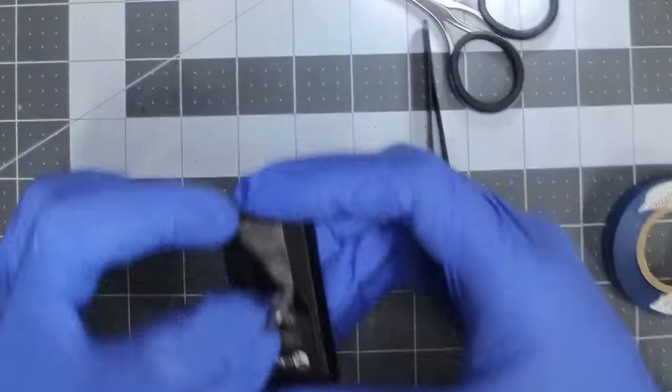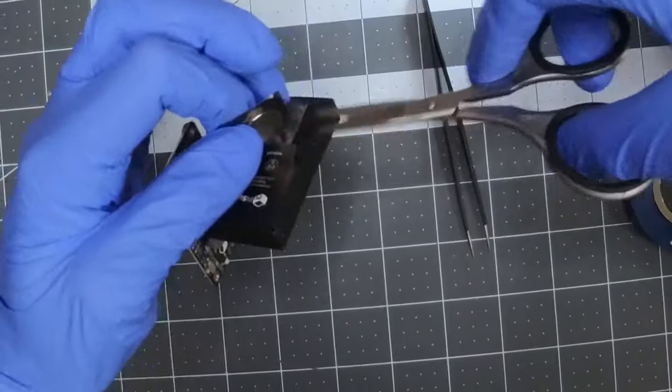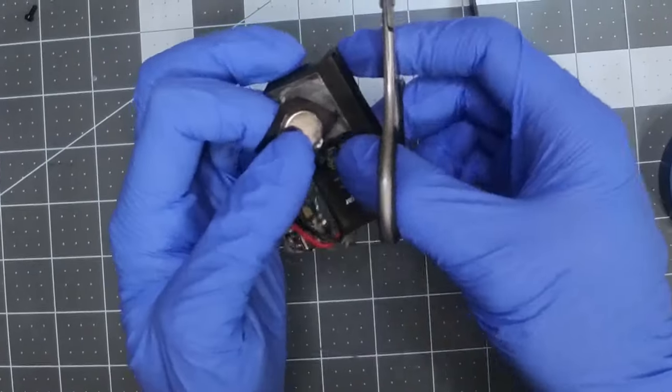To make the PiSugar power supply thinner, remove the magnet on the battery. Pry up a corner of the insulation and pull it and the magnet away from the battery.